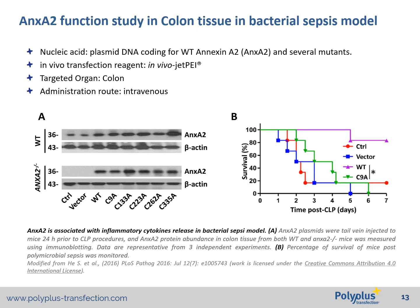To consolidate their observation, they performed an in vivo rescue study in which they delivered plasmid DNA expressing wild-type Annexin A2 and several mutants using in vivo-jetPEI by systemic administration to target the colon tissue. As shown in Figure A, they could detect expression of overexpressed Annexin A2 mutants 24 hours post-transfection in the colon tissue of wild-type and Annexin A2 knockout mice. This overexpression of wild-type Annexin could improve the survival rate of the mice (purple line), while the Cysteine 9 mutant led to a similar outcome as delivery of an empty plasmid vector or no plasmid control.